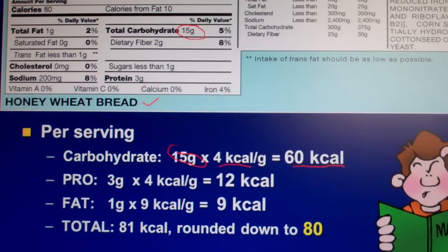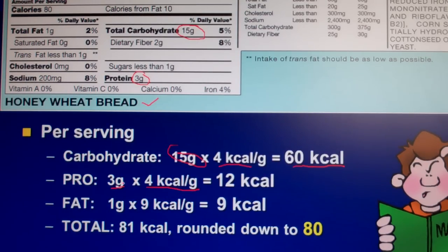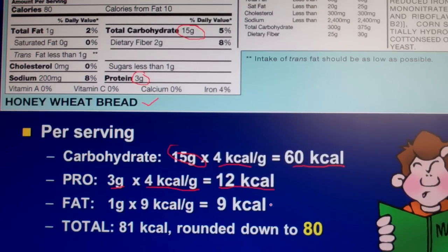Now we do the same thing for protein. We find protein and we see that there are 3 grams of protein. Like carbohydrates, protein has 4 kilocalories of energy per gram. So since we have 3 grams of protein, we multiply 3 times 4, and that comes out to 12 kilocalories from protein.